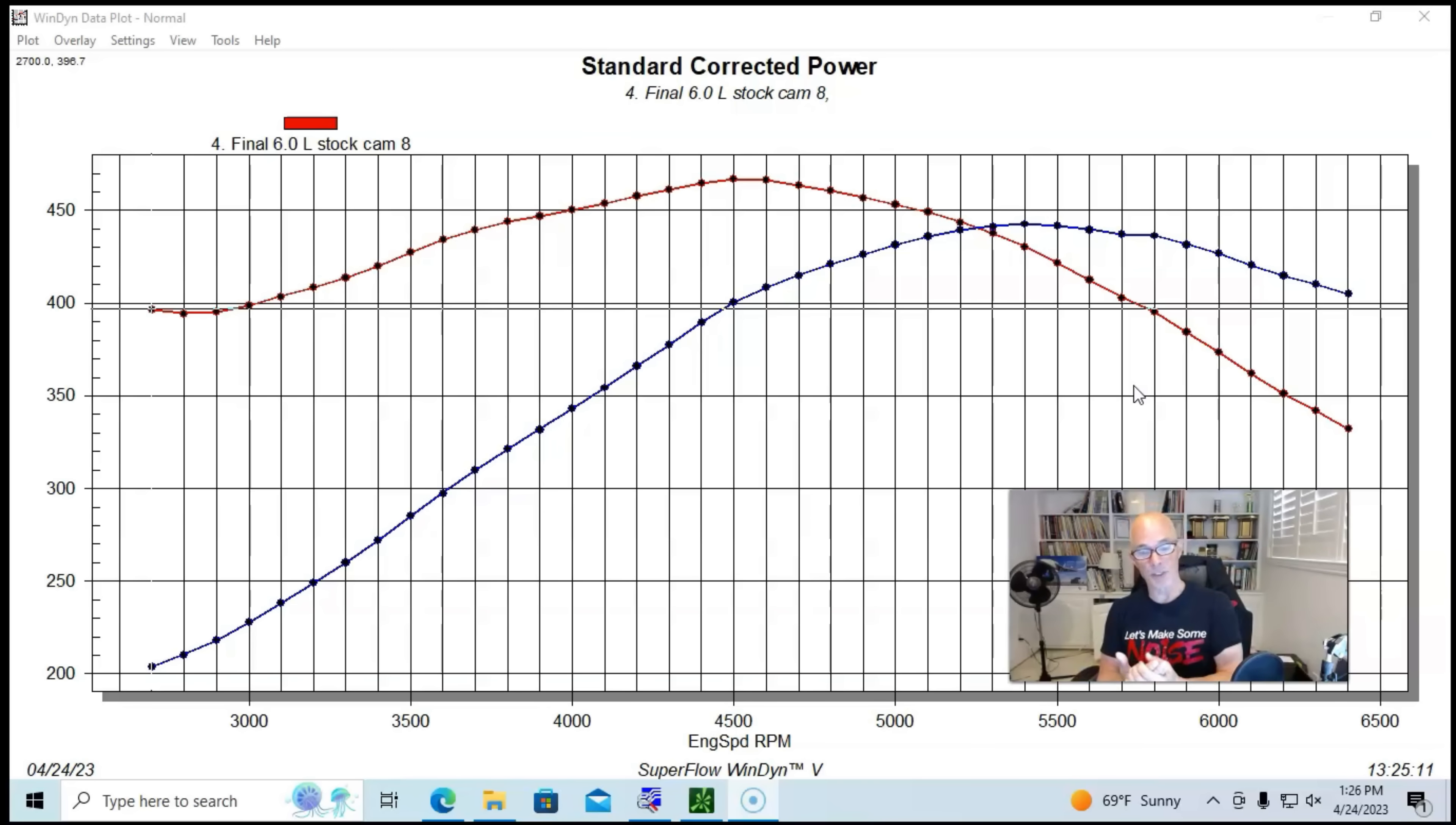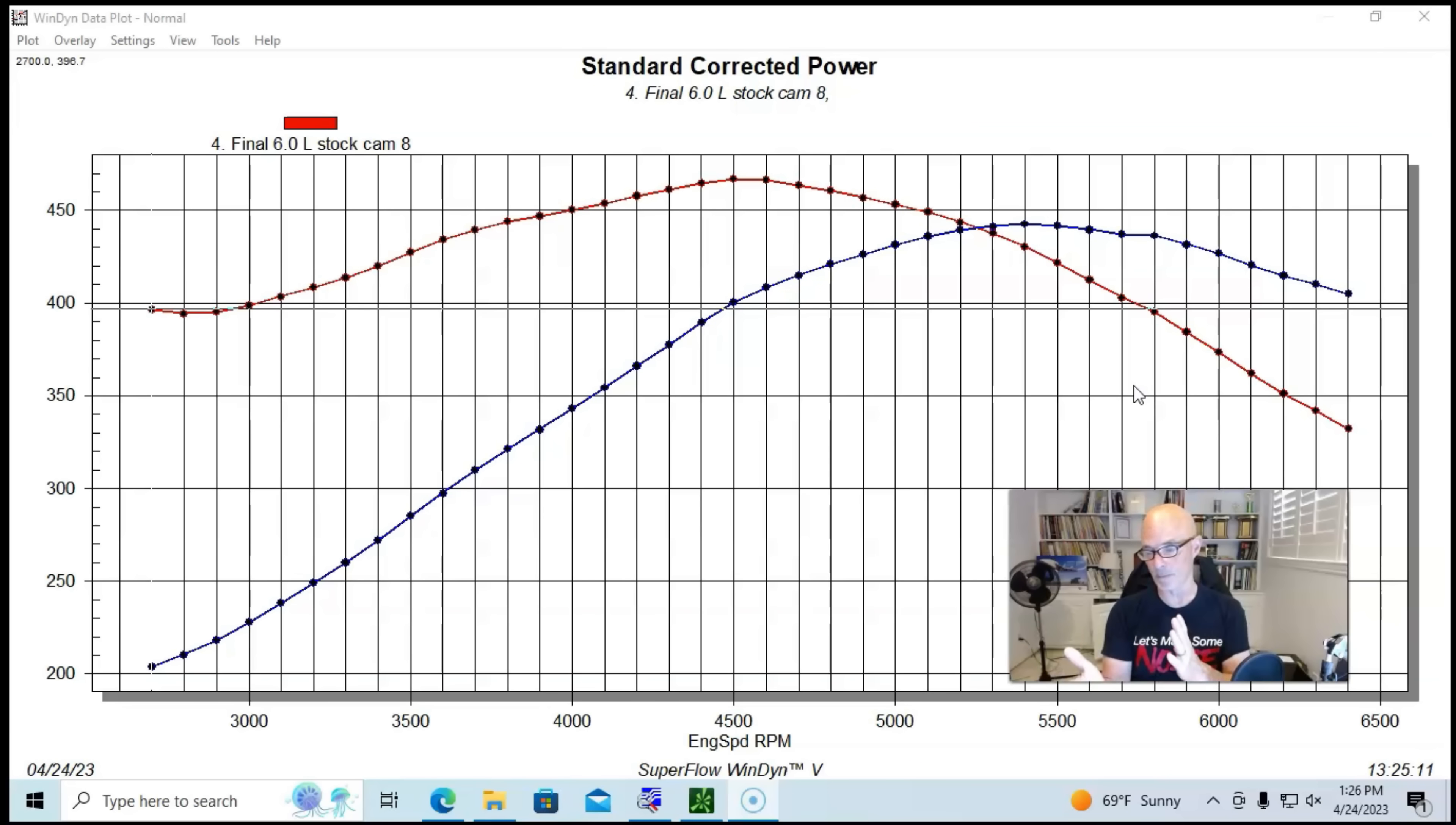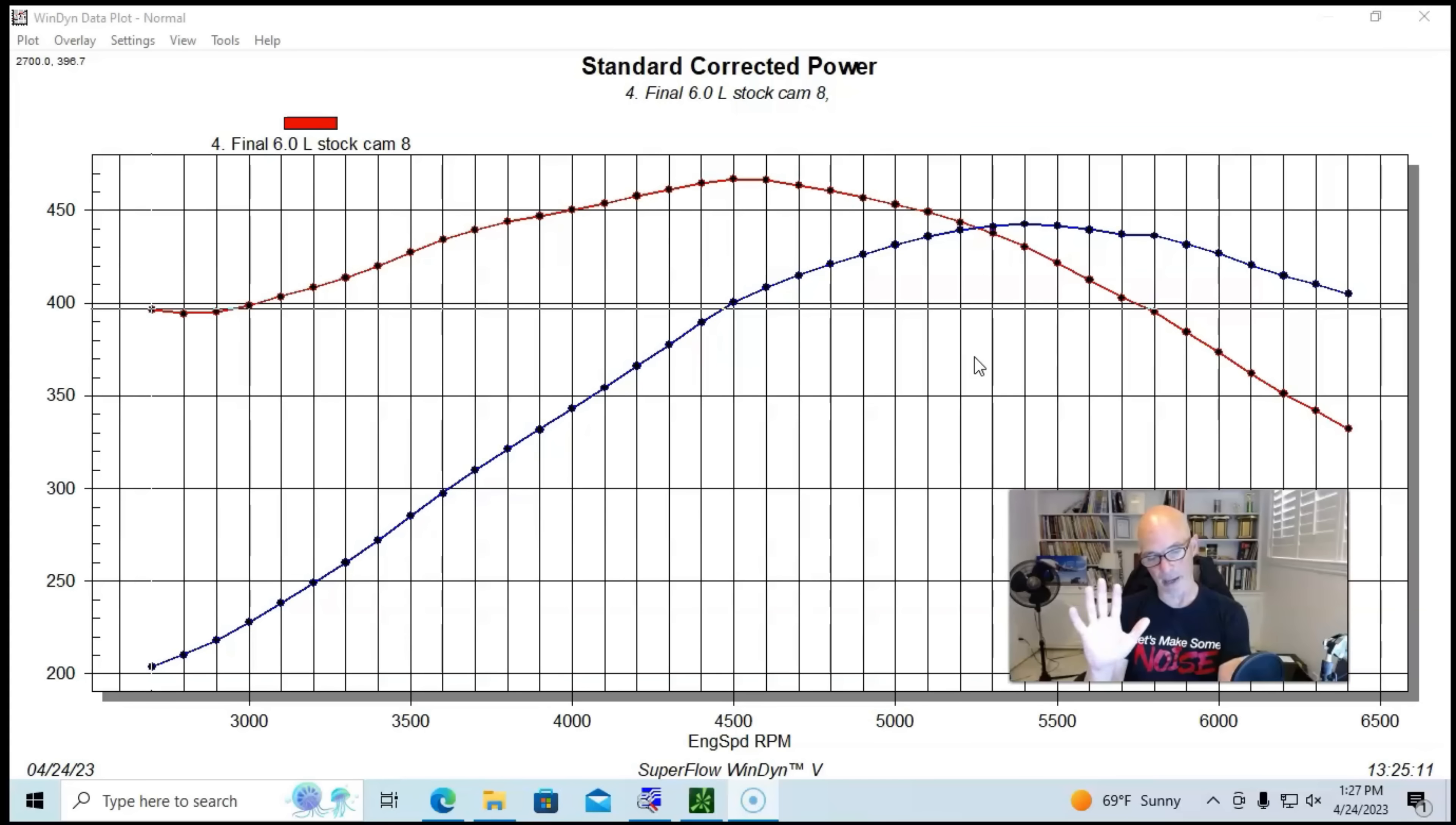So we ran this, this motor was way back before we did the Big Bang stuff with it. This was an LY6, so that means it's a rec port 6 liter with the LS3 style heads, and we had the factory truck intake manifold on the rec port intake manifold. Basically, it's a duplicate, a truck version of the LS3 intake manifold for the rec port head.